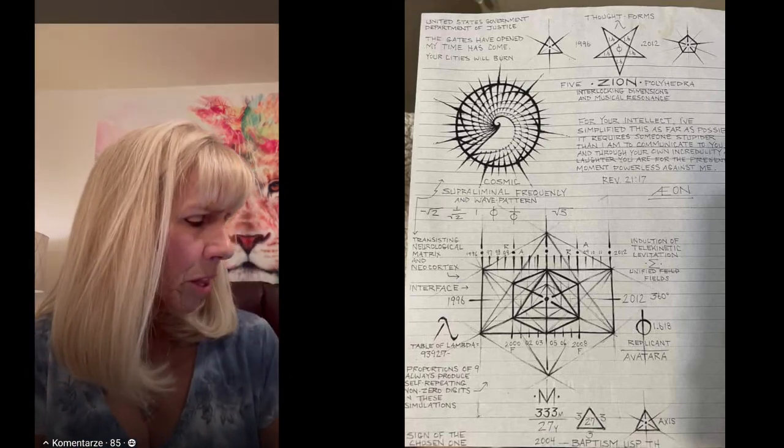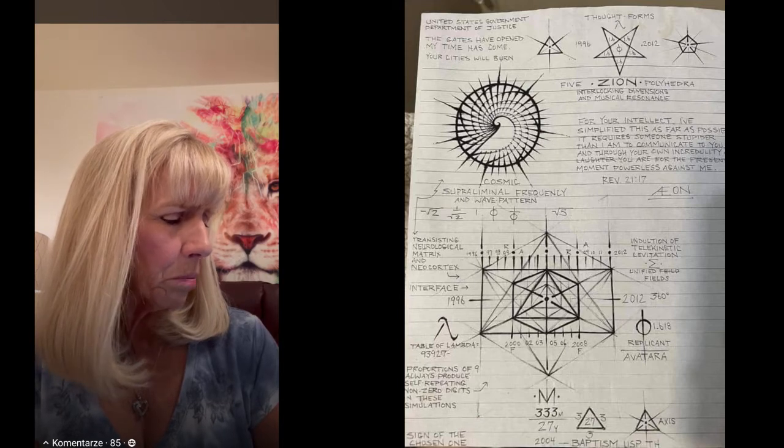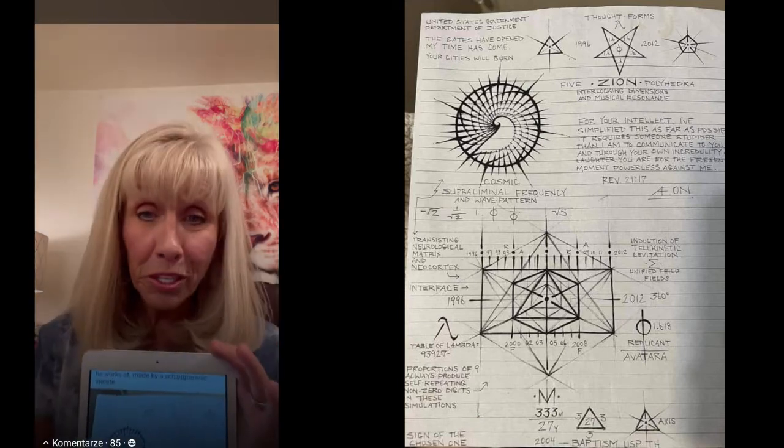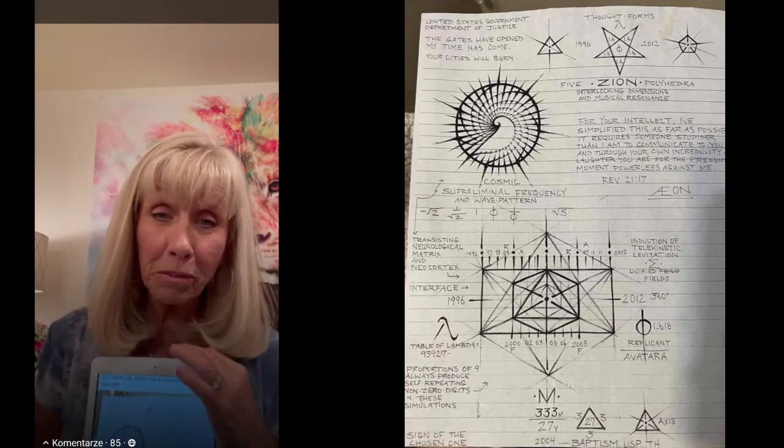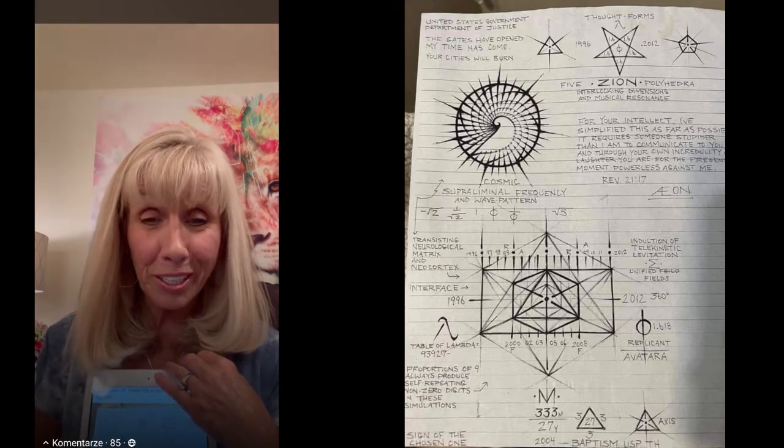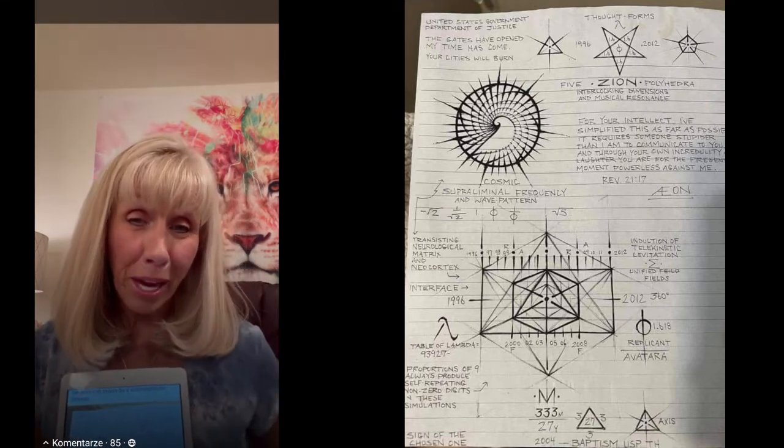United States Government Department of Justice. The gates have opened, my time has come, your cities will burn. What he was stating is that the Department of Justice system—our whole world is owned by the dark here on this playing field, and the judges wear black robes.